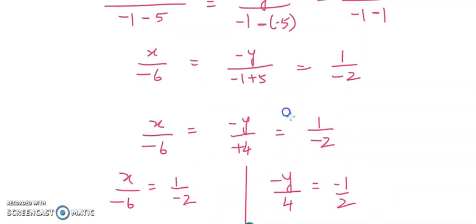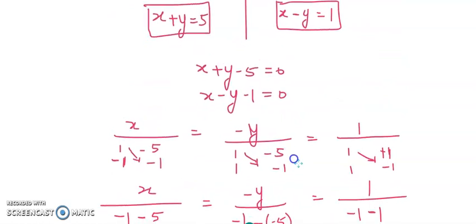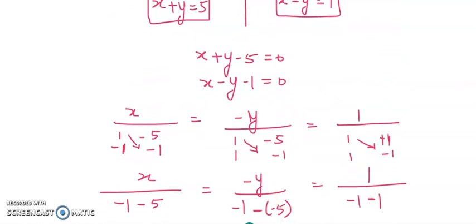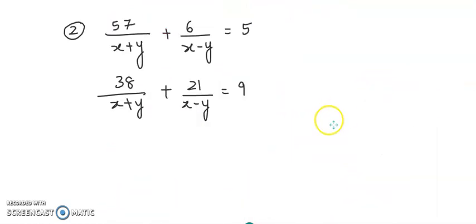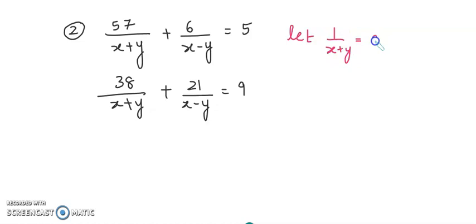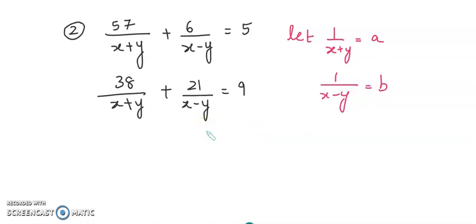So did you see how we have done the double cross multiplication? Let me take the next question. Again, our denominator is x plus y and x minus y, so we go with the same rule. Let 1 upon x plus y equals to a and 1 upon x minus y equals to b. Now in this question, I will help you with the first cross multiplication method. The second cross multiplication method is yours to finish.